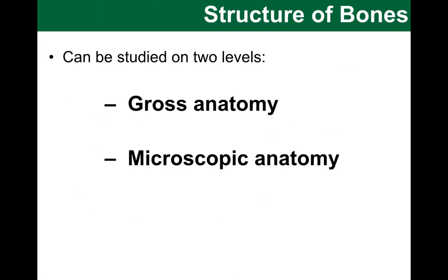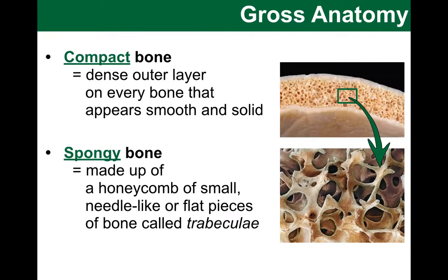Next we should look at the structure of bones, starting at the larger scale and then moving on to a more detailed study. Let's start by looking at the gross anatomy of the bones. We have two types to introduce here. First, compact bone is what we see typically as the outer layer of pretty much every bone. It is the smooth, dense, solid bone type. Some bones are fully compact bone, while many have an outer layer of compact bone and then the interior is made of spongy bone.